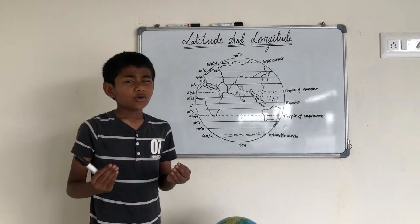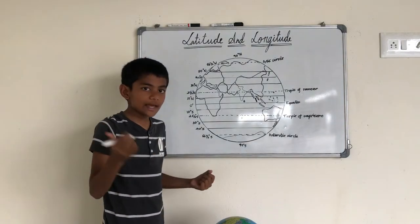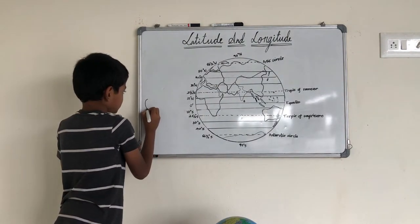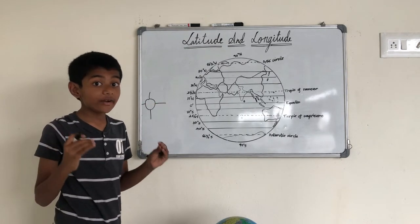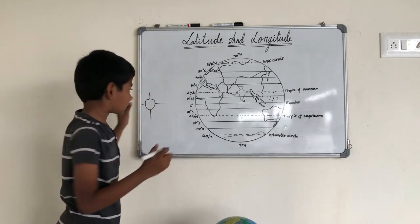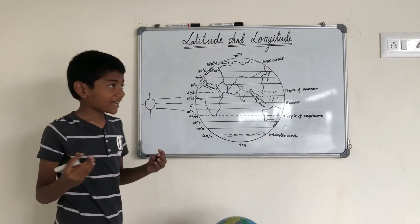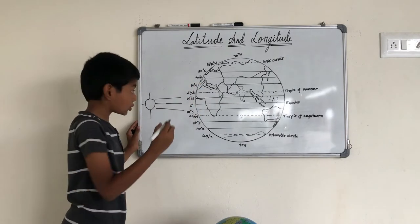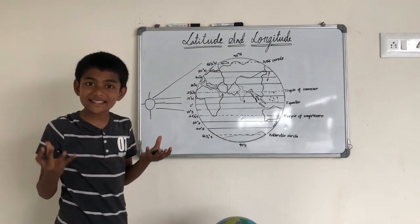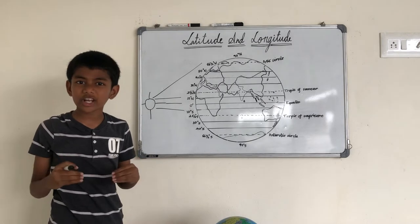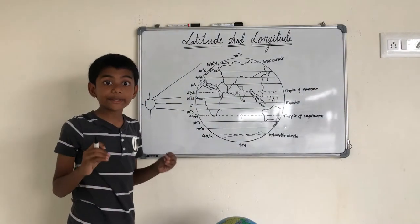Do you know how latitudes affect the climate? For example, the sun will be direct in the places near the equator, so these places will be hot. But as the degree increases, the sunlight has to travel at a slant, so those places receive less sunlight. Those places are moderate or cool, while places near the equator are hot, humid, and receive a lot of rain.